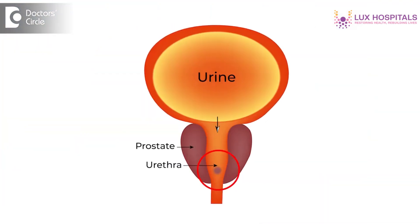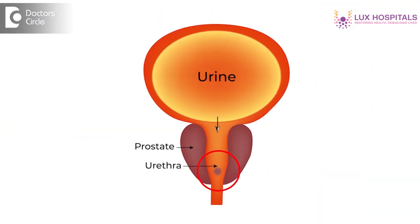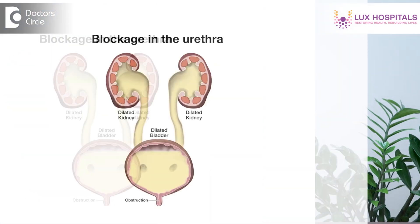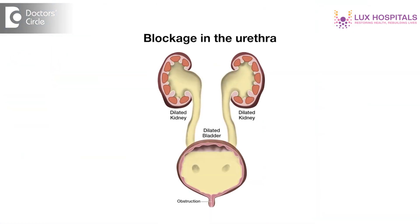Coming to urethral stricture — urethral stricture is nothing but any scar which occurs in the passage of the urethra. The urethra is the tube which passes from the urinary bladder up to the tip of the penis, almost around 25 to 30 cm in length. Whenever scarring occurs in the urethra, either due to an infectious cause or trauma, there is blockage — either complete or partial.